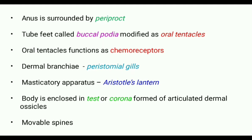There are 5 pairs of tube feet known as buccal podia arranged around the mouth, modified as oral tentacles that serve as chemoreceptors. There are also dermal branchia called peristomal gills used for respiration. The mouth is armed with a masticatory apparatus known as Aristotle's lantern.